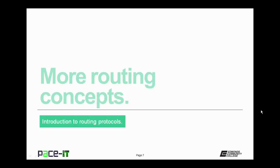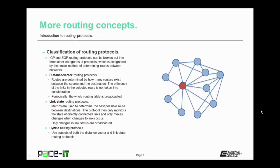Now let's move on to more routing concepts. Routing protocols can be classified by how they perform their routing. Interior gateway and EGP routing protocols can be broken out into three other categories, designated by their main method of determining routes between networks. The first class is distance vector routing protocols. With distance vector routing protocols, routes are determined by how many routers exist between the source and the destination. The efficiency of the links in the selected route is not taken into consideration. Periodically, the whole routing table is broadcast out onto the network.